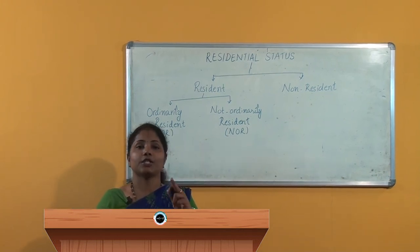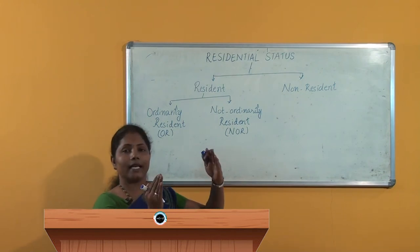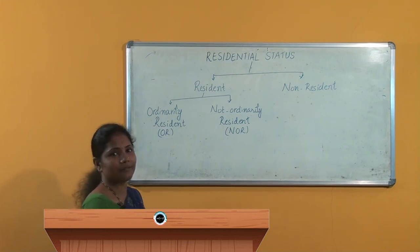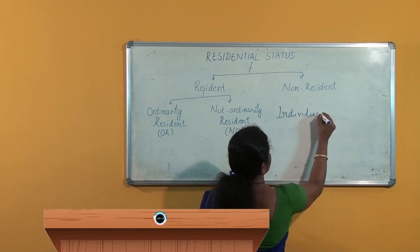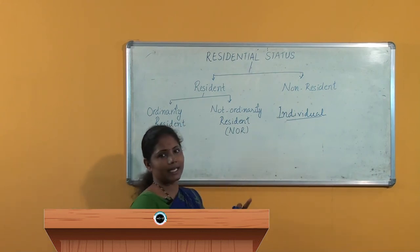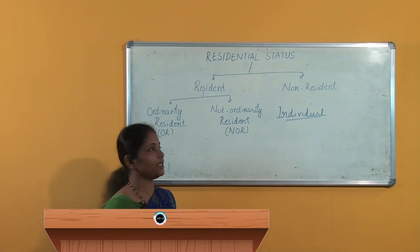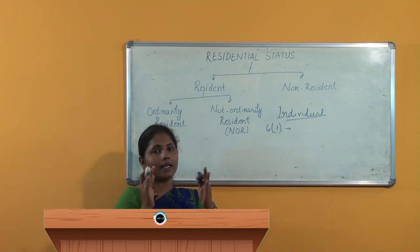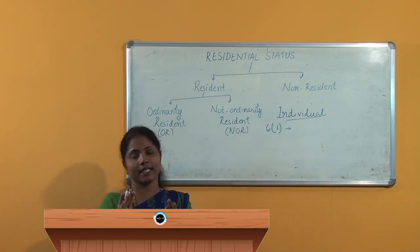We have to see how to determine the residential status for each person — for an individual, for a Hindu undivided family, for a firm, and for a company. Let us commence with an individual. Section 6 of the Income Tax Act lays down the basic conditions and additional conditions to consider an individual as a resident or non-resident. Section 6 subsection 1 states the basic conditions to be fulfilled by an individual to become a resident of India.